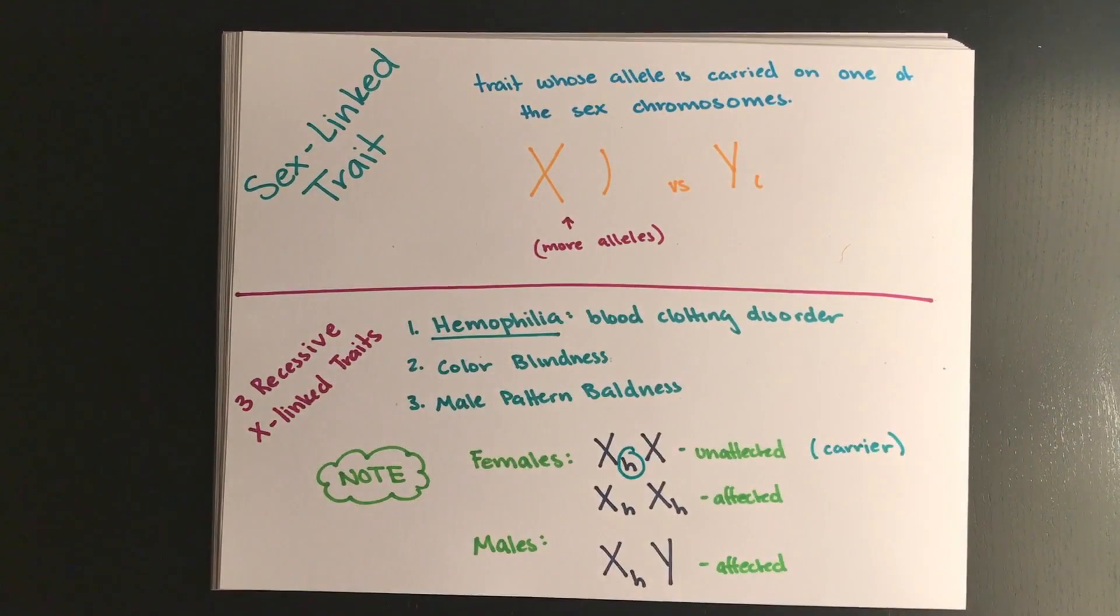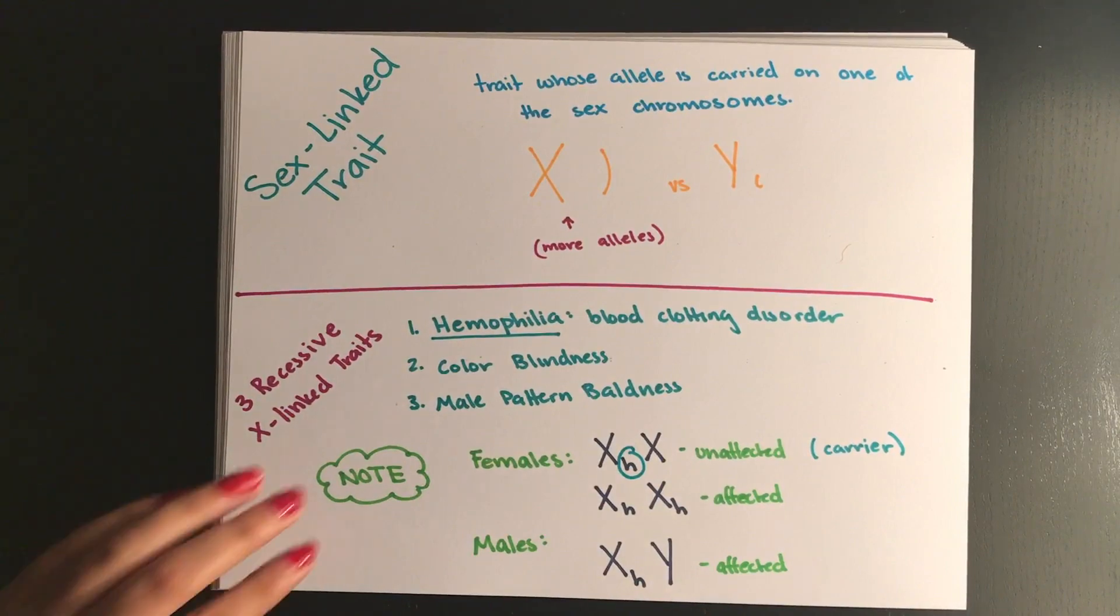When someone carries one recessive allele for a disease they're called carriers because they don't actually exhibit the recessive allele but they have the potential to pass it on.